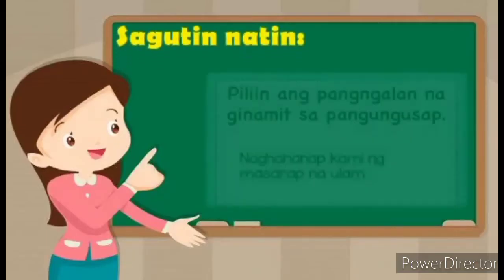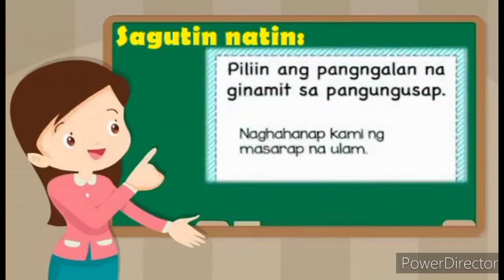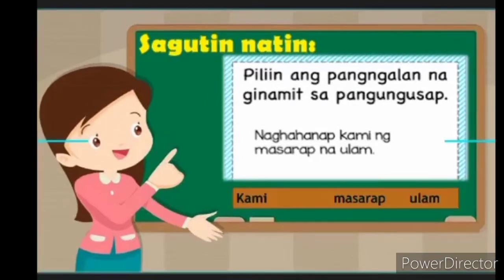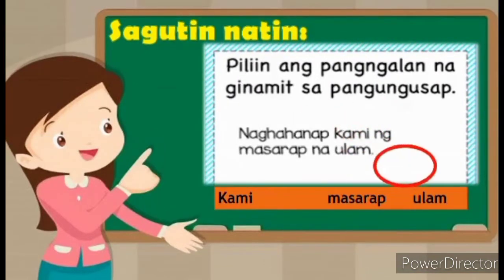Sagutin natin. Piliin ang pangalan na ginamit sa pangungusap. Basahin natin lahat ang pangungusap: Naghahanap kami ng masarap na ulam. Alin dito ang pangalan? Kami, masarap, o ulam? Magaling! Ang ulam ang pangalan.